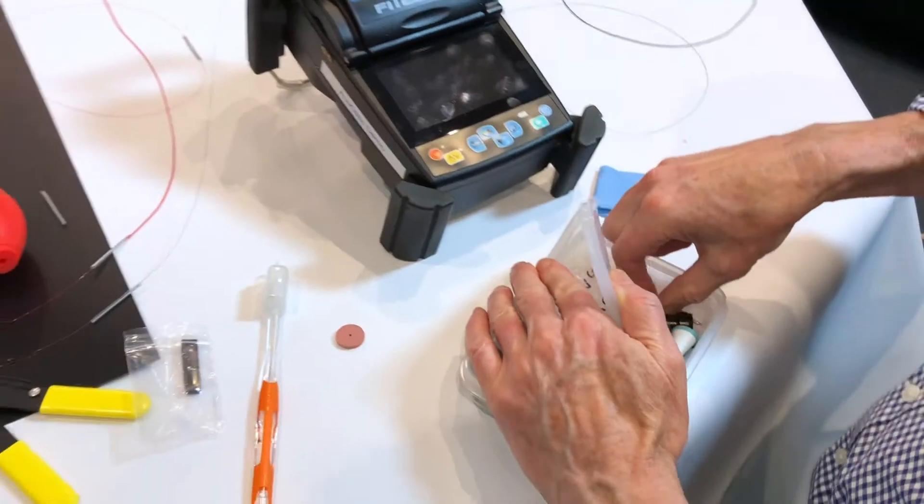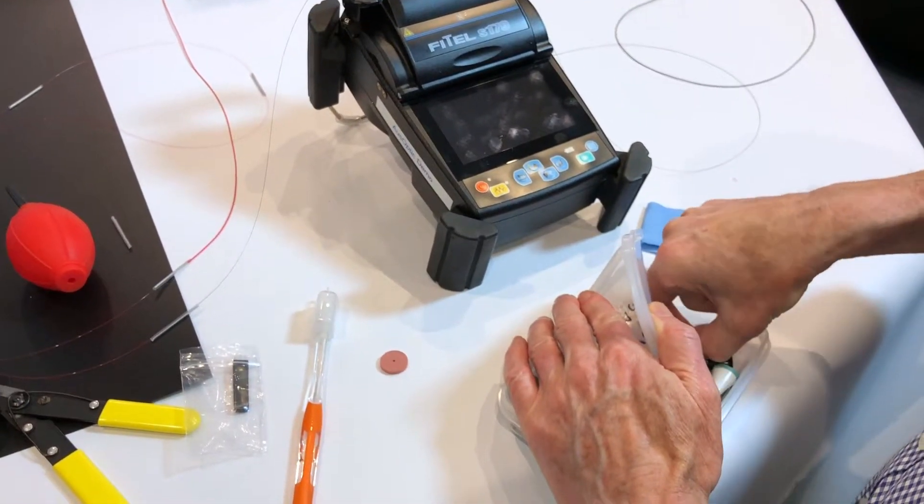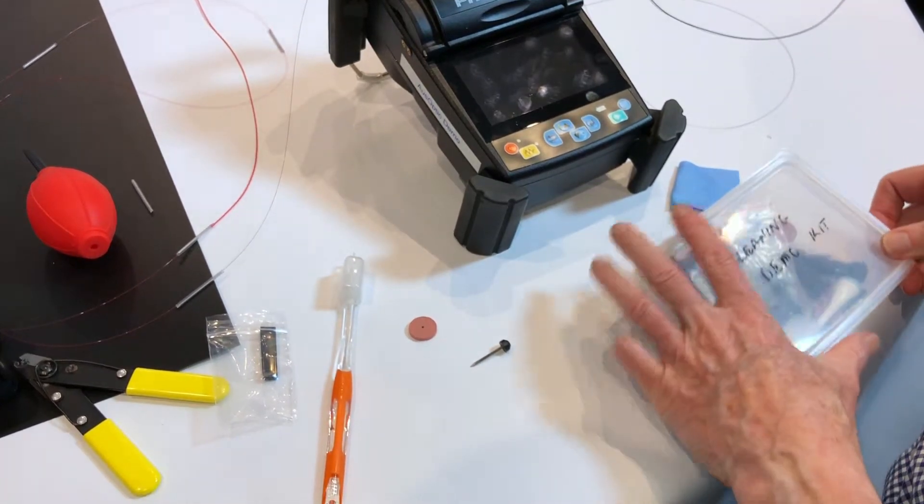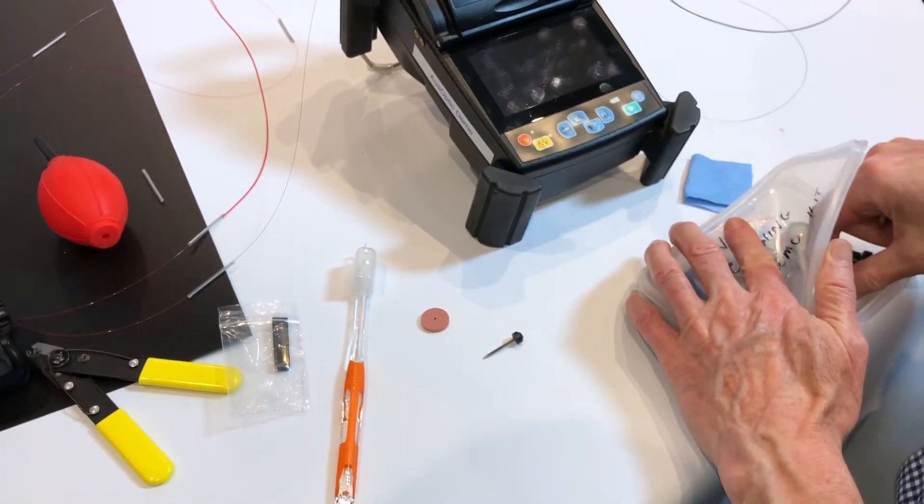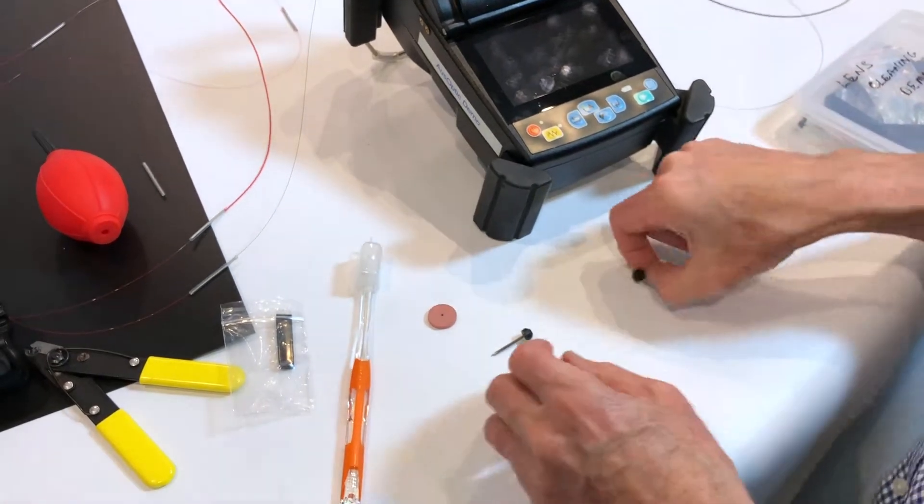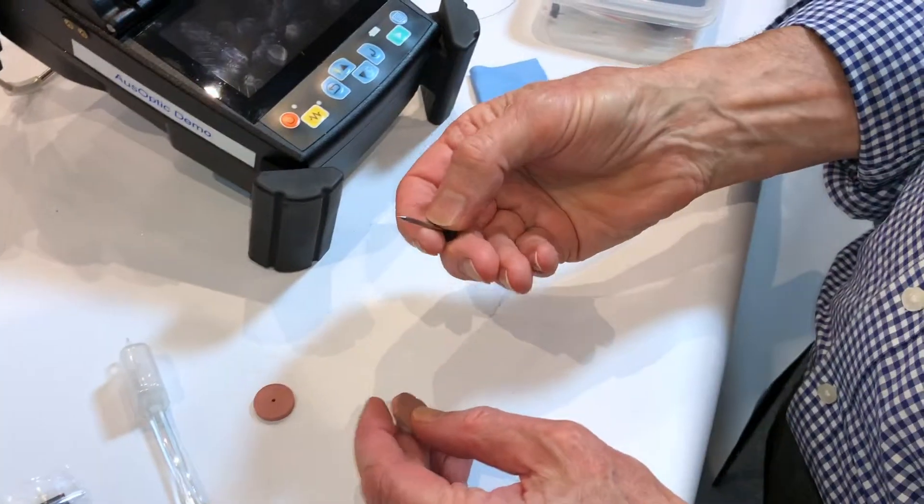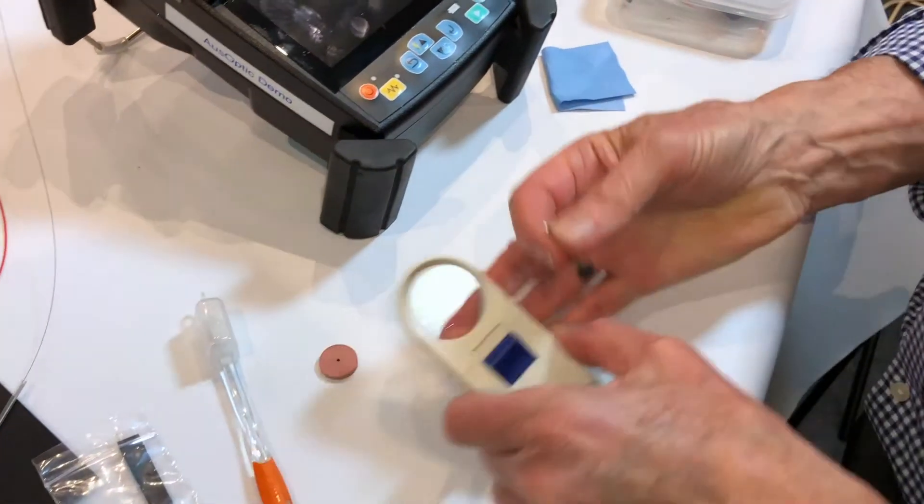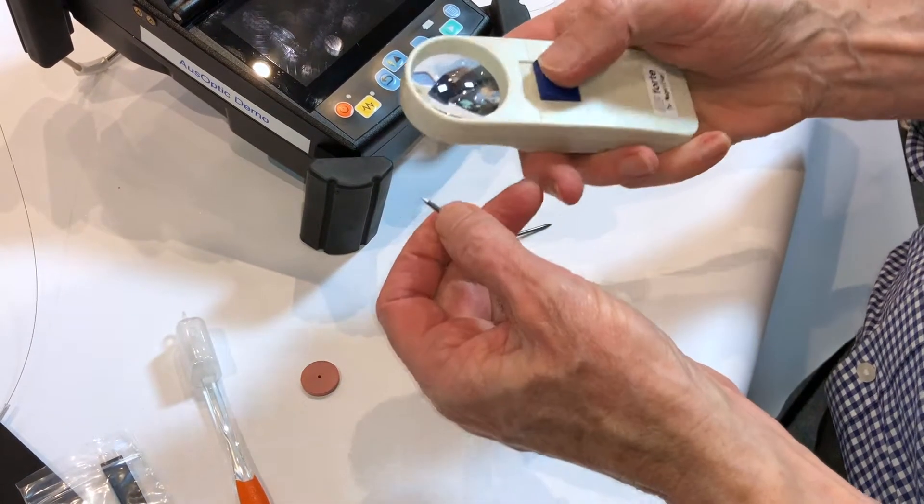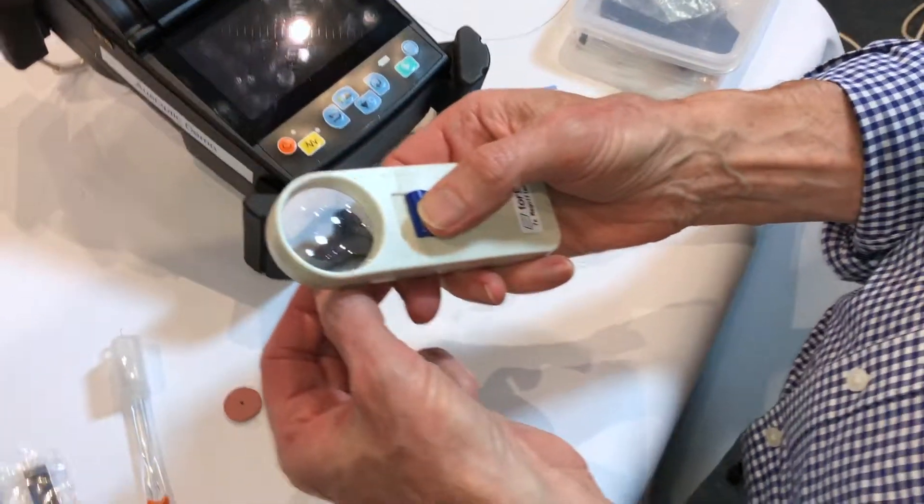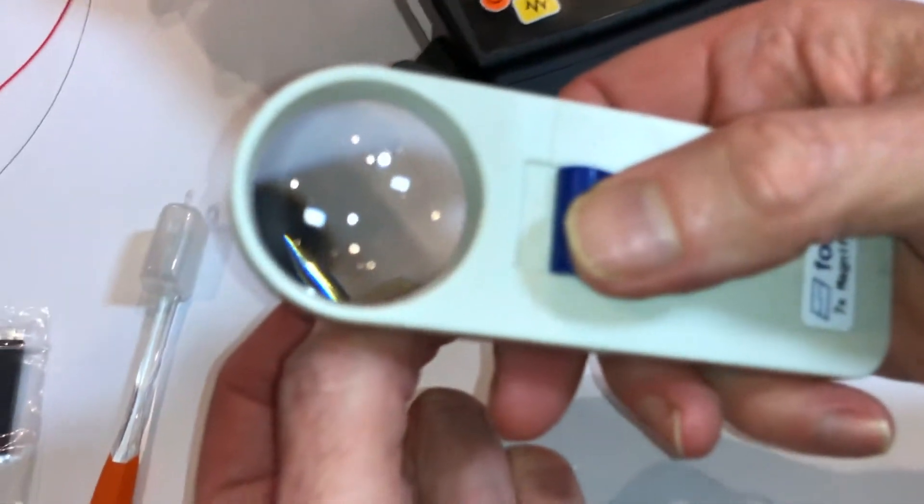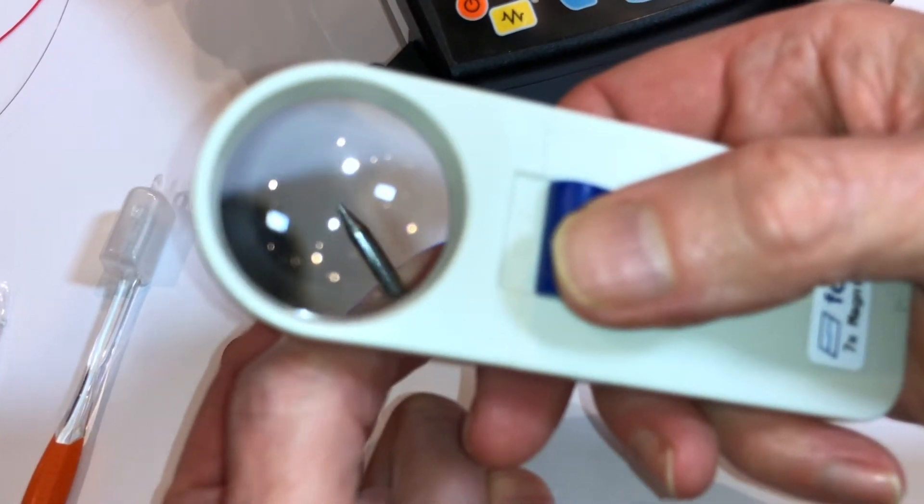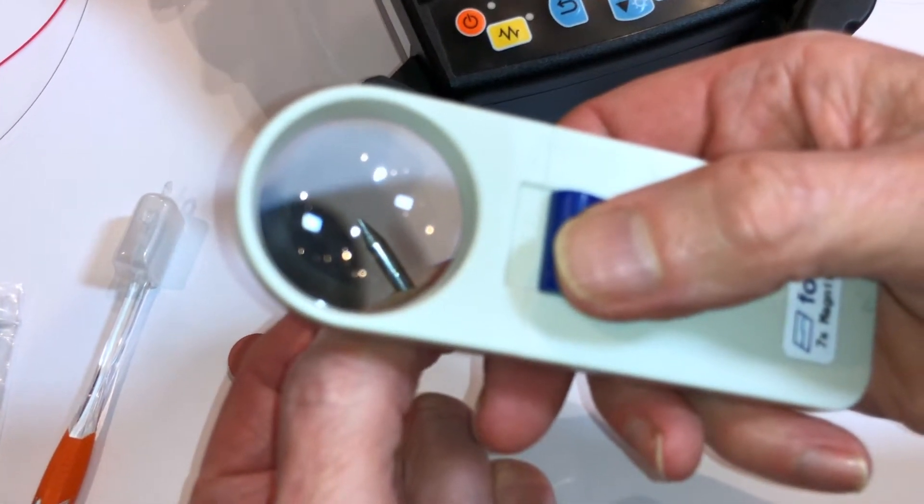Here I've got some old electrodes that we can play with. There's a couple of things that we can do here. We can check the quality of the end of the electrode by using a magnifying lens. We're looking for it to be completely symmetrical and no damage to the tip, no etching.